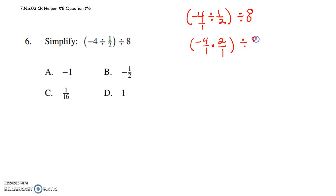And I still have divided by 8 on the outside. Well, these are both over 1, so I don't even have to consider that. Negative 4 times 2, this would be negative 8 divided by 8. Now at this point you just have to know negative divided by a positive is a negative. 8 divided by 8 is 1. So my final answer would be negative 1.